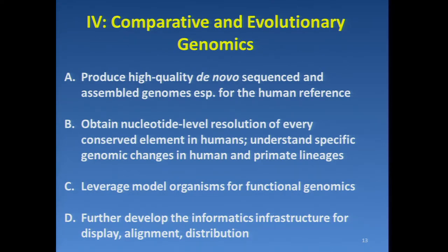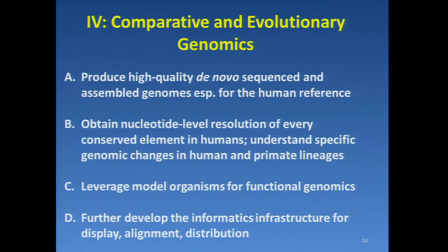In the final area, comparative and evolutionary genomics, there were several discussions. One was that we ought to produce some high-quality de novo sequenced and assembled genomes, especially for the human reference — the numbers thrown around were 25 to 50. These are needed because it's not always possible to map to certain regions of newly sequenced genomes. Another idea was that structural variation is extremely important, and this would enable better characterization of it. To obtain nucleotide-level resolution of every conserved element in humans and understand specific genomic changes in human and primate lineages. Third, to leverage model organisms for functional genomics. And finally, to further develop the informatics infrastructure for display, alignment, and distribution of information.